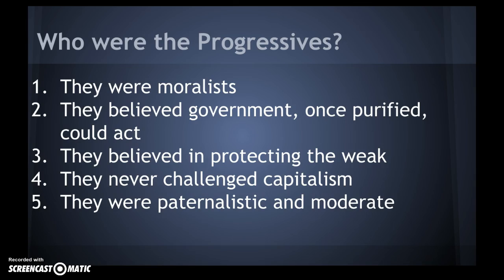They came from cities and you can also put down that they were educated middle class. I put down both political parties, so it's pretty uniform. Their leaders were journalists, social workers, educators, politicians, and clergy. They all agreed that the government needed to address society's evils, but they doubted the current government's ability. So their goal was to reform government and fix it. They believed in science and the power of technology, which had produced inventions like the telephone and light bulb, and this could also be harnessed to help society.